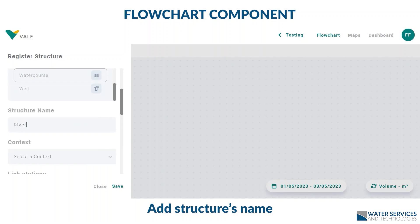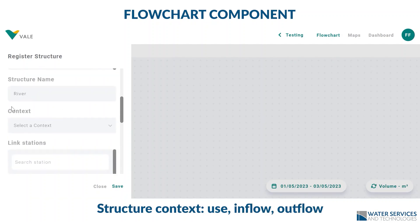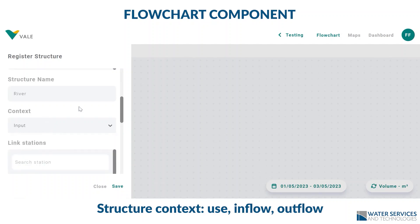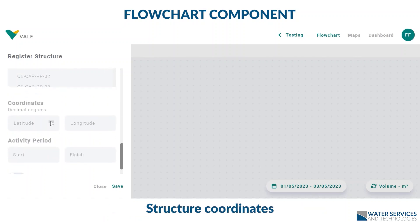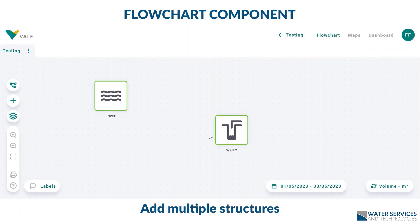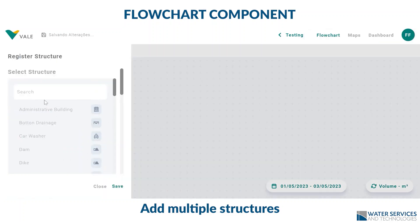These structures are totally customizable. In this example, we are generating a river. Then you link it to a station already registered in your database. You enter the coordinates X and Y.